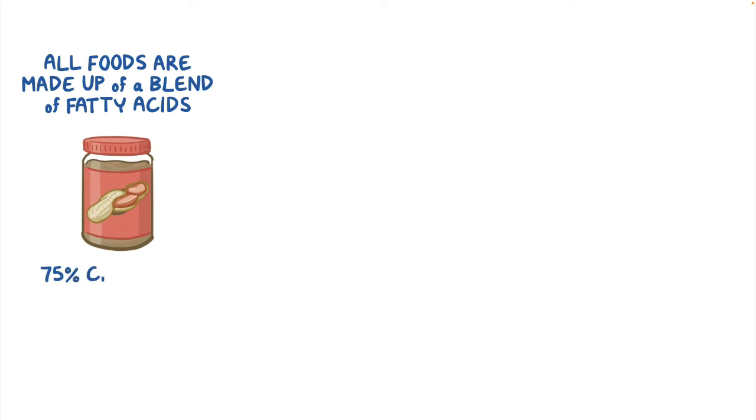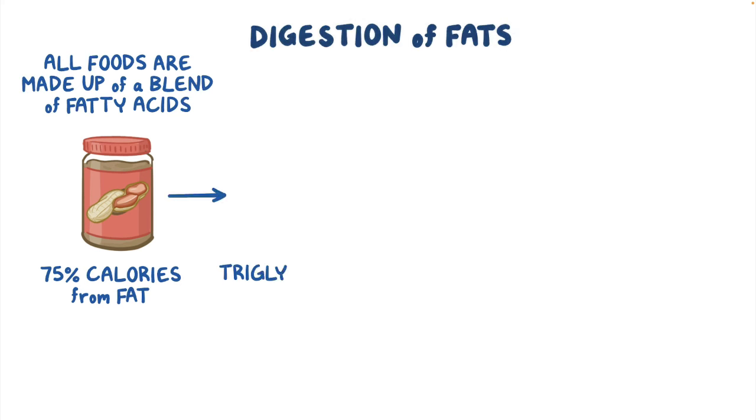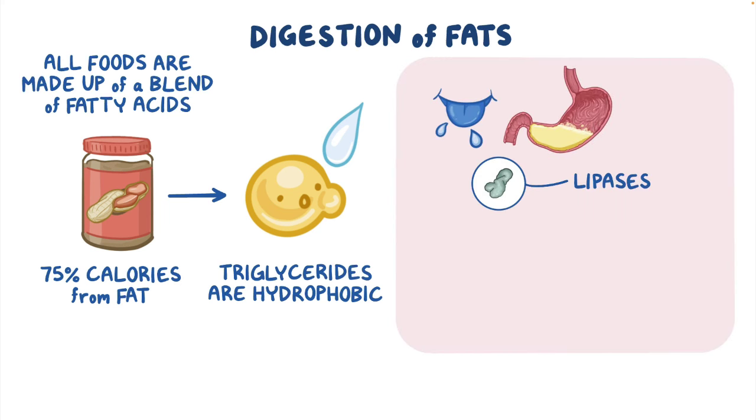Although some foods might have more of one type of fat than another, the truth is that all foods are made up of a blend of fatty acids. When you eat a food like peanut butter, which has about 75% of its calories from fat, the body goes through a set of steps to digest and absorb the fatty acids. First of all, triglycerides are hydrophobic, so they form large globules of fat, like what you see when you pour oil and water. Enzymes called lipases in the saliva, stomach, and secreted by the pancreas can break down triglycerides into free fatty acids and monoglycerides.